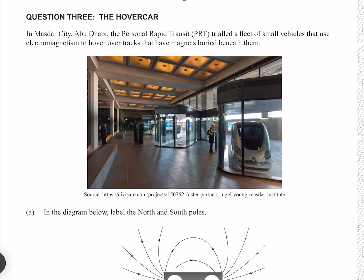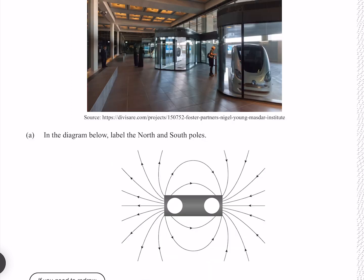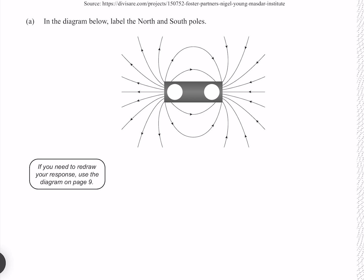Question three: in Masdar City, Abu Dhabi, the Personal Rapid Transit (PRT) trialed a fleet of small vehicles that use electromagnetism to hover over tracks with magnets buried beneath them. In the diagram below, label the north and south poles. Magnetic field lines always point away from north and towards south, so this must be the north pole and this must be the south pole.